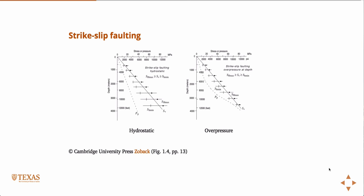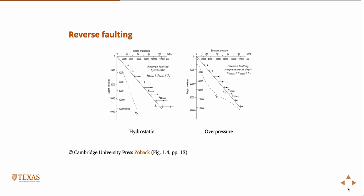Same picture for reverse faulting. In reverse faulting, the vertical stress is the minimum — SH min and SH max are both greater than the vertical stress. In this case there's nothing between the vertical stress and the pore pressure, but in an overpressure scenario where pore pressure increases, the effective stress decreases and this distance still gets squeezed down.